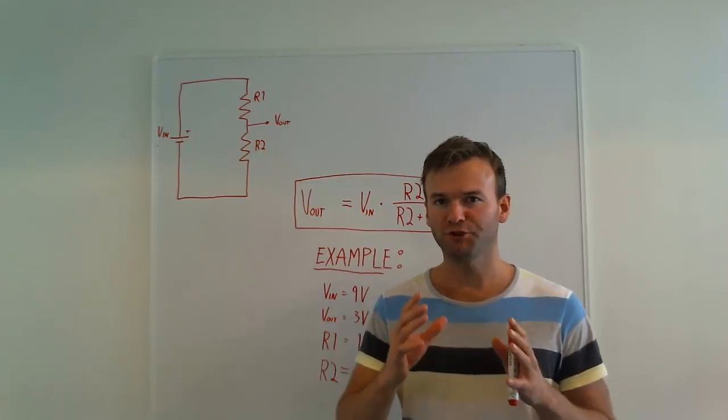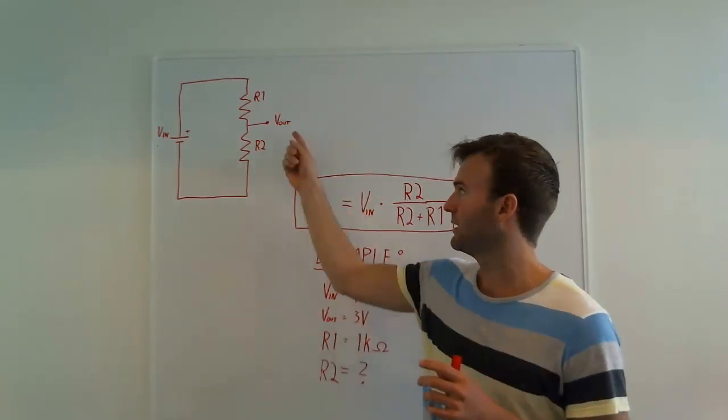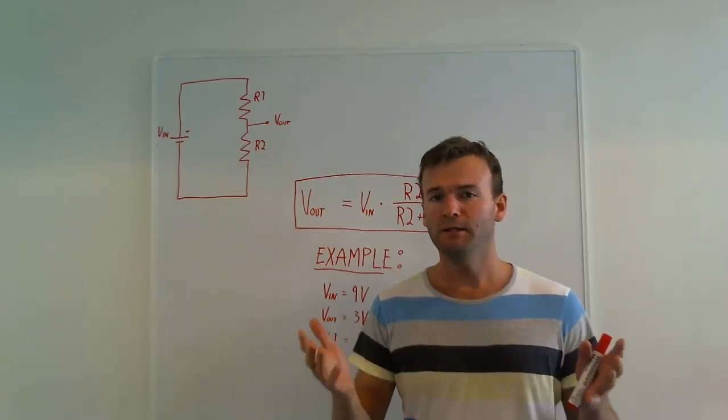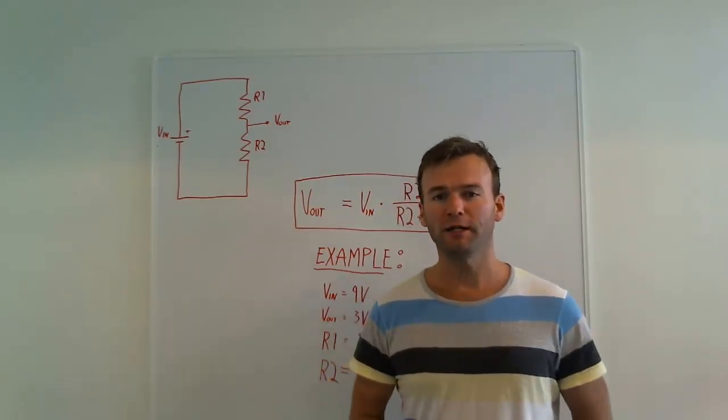By using a photoresistor you can read out the voltage and figure out how much light there is. Then you can, for example, turn on a light when it gets dark.